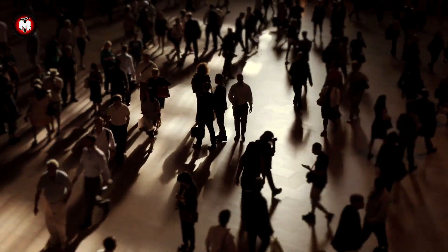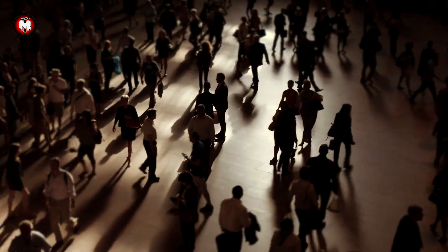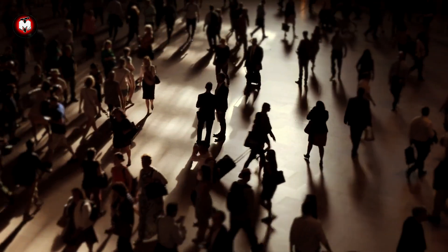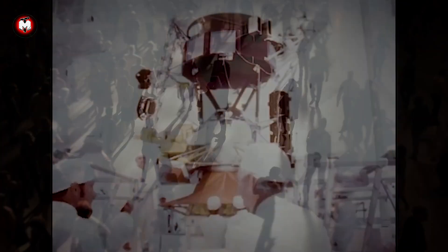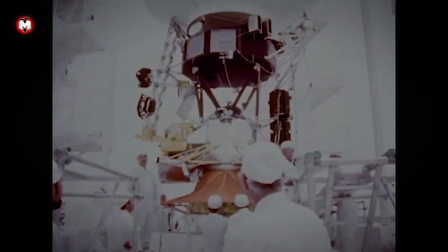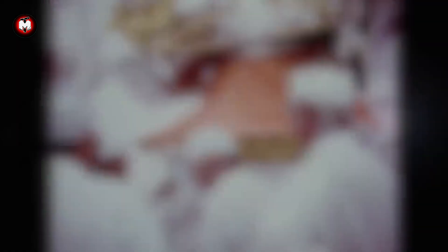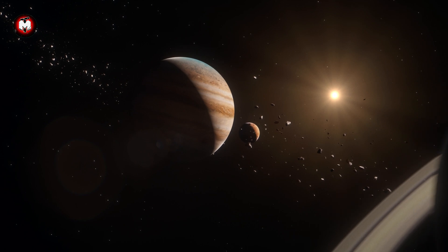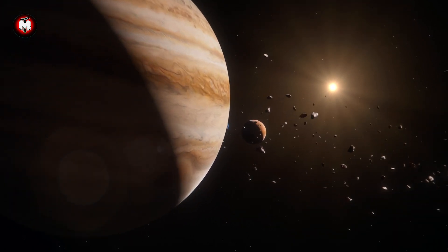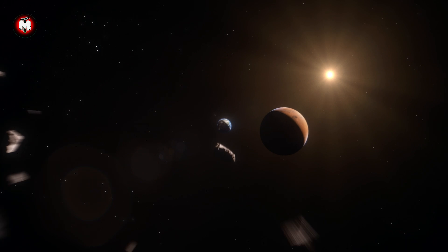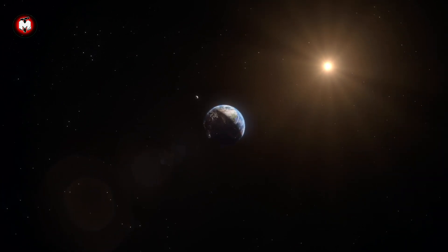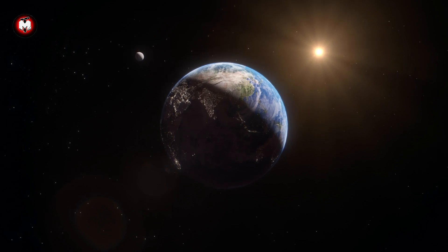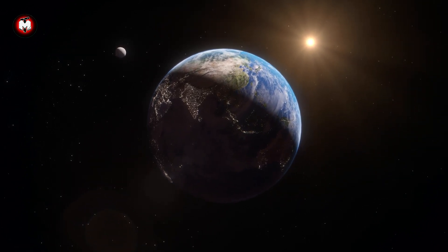The Voyager missions represent something uniquely human: our desire to explore, to push boundaries, and to answer the question, what's out there? Built with 1970s technology, they've not only survived but thrived in an environment more hostile than anywhere on Earth. They've shown us active volcanoes on distant moons, revealed the intricate beauty of planetary rings, and now they're writing the first chapter of humanity's story in interstellar space. Every day they operate is a day we learn something new about our cosmic neighborhood.